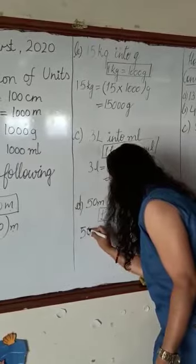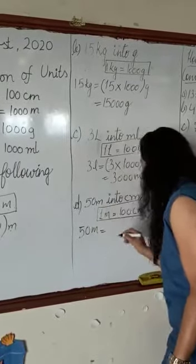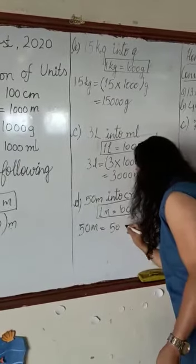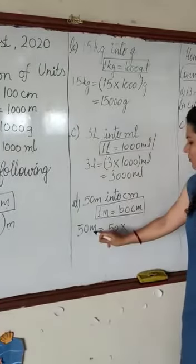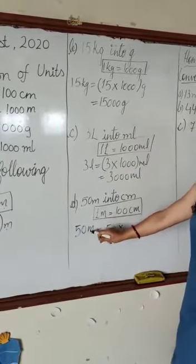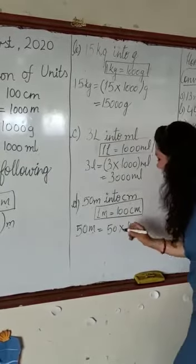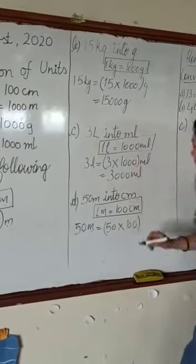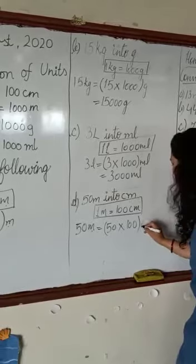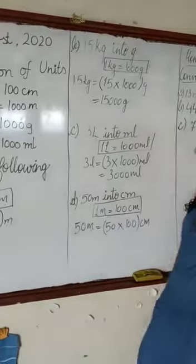So we have to convert 50 meters. We will write 50 multiplied by—instead of meters, we will write this unit, that is 100. And we will write the unit centimeters because we are converting to centimeters.